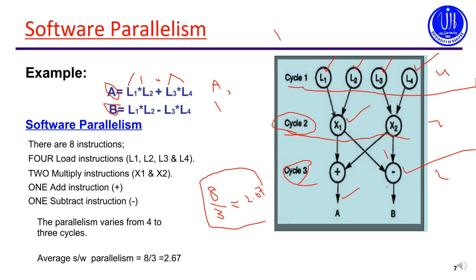This is achieved using the same single processor — no multiple processors — but by using computer programming we arrange the operations in this sequence. This is a type of software parallelism. In the next example we can see the hardware parallelism.